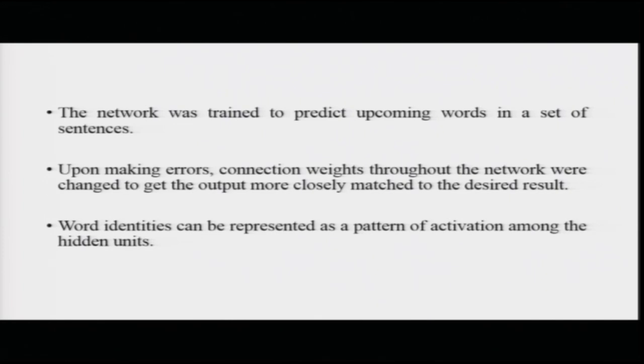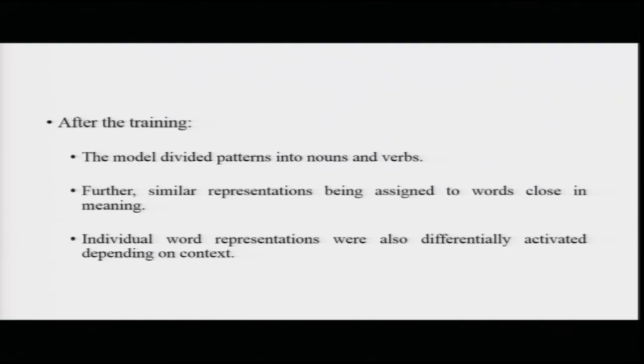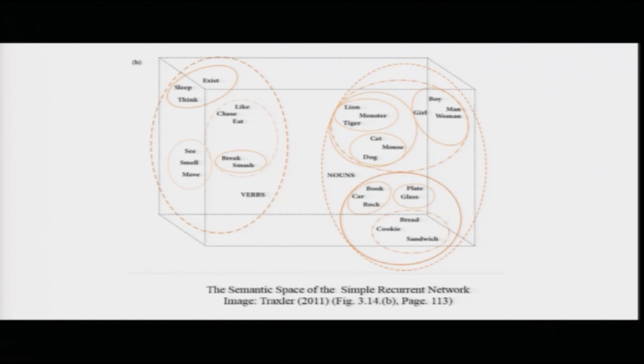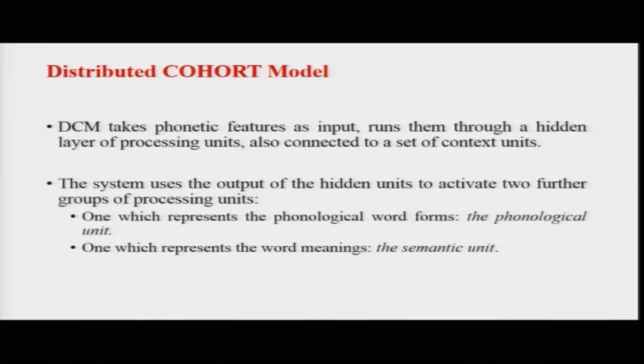Word identities can be represented as a pattern of activation among the hidden units. After multiple rounds of training, the model divides the set of incoming words into nouns and verbs, with similar representations assigned to words close in meaning. For example, lion, tiger, and monster come together; cat, dog, and mouse come together; book, car, and rock come together. Similar nouns are grouped together compared to dissimilar nouns. Individual word representations are also differentially activated depending on context - words that fit the sentence context will have the highest activation.